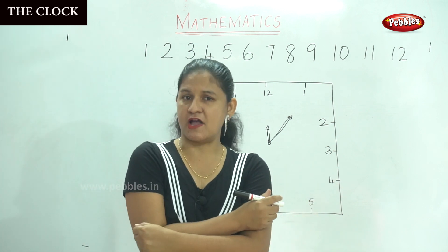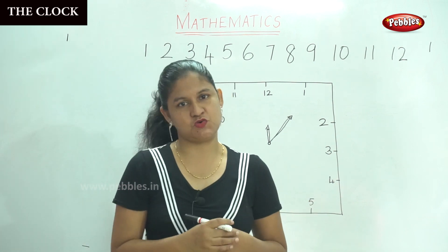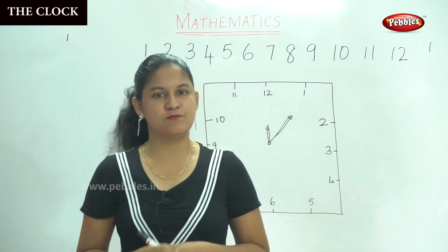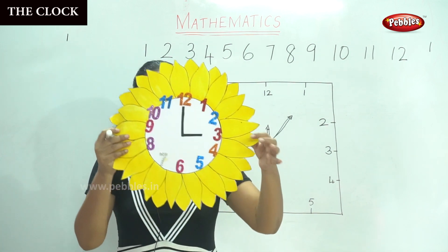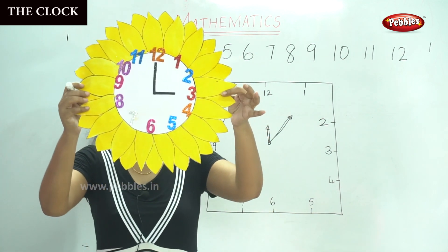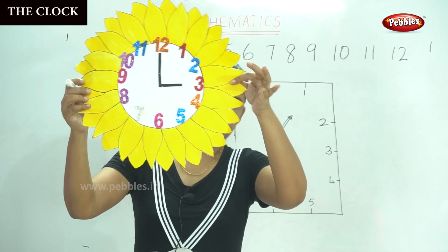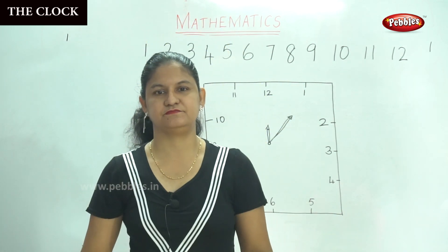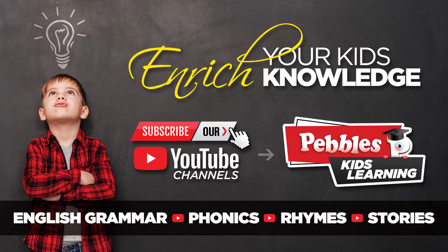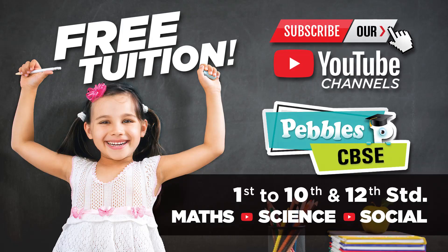So if you have a clock at home, you can look at it more closely. So have you seen this? This is the clock. These are the numbers on the clock. Here we go. Thank you.